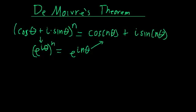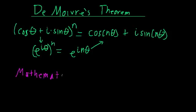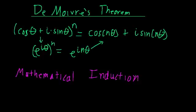You may think this is nice but fairly trivial because we have something much more powerful. But here's the kicker — de Moivre was able to show this before he saw Euler's formula. So they found this out before Euler's formula. You may be thinking, how did he know how to do it then? He was able to prove this with a technique called mathematical induction.